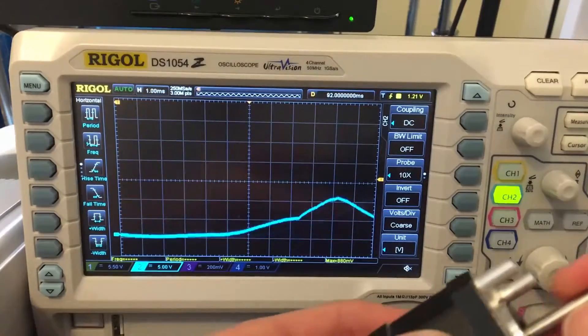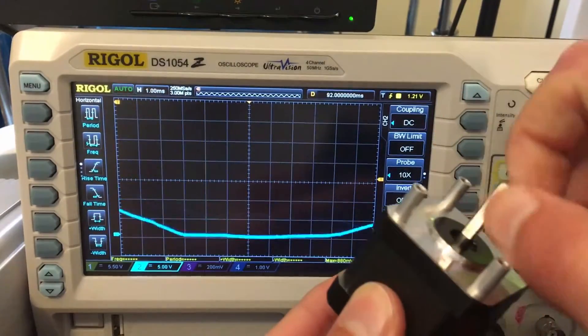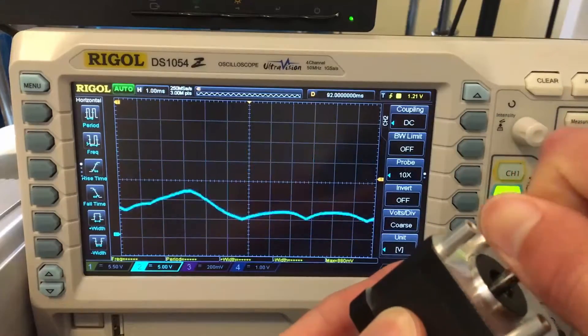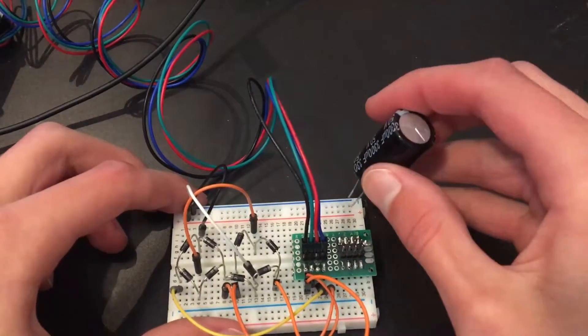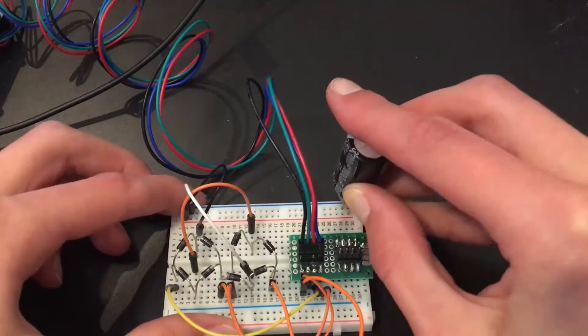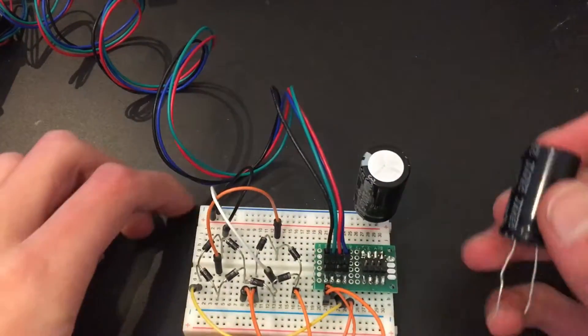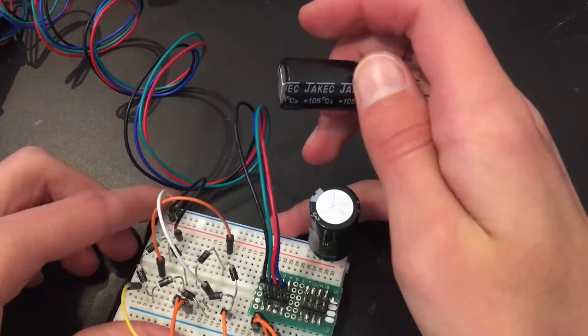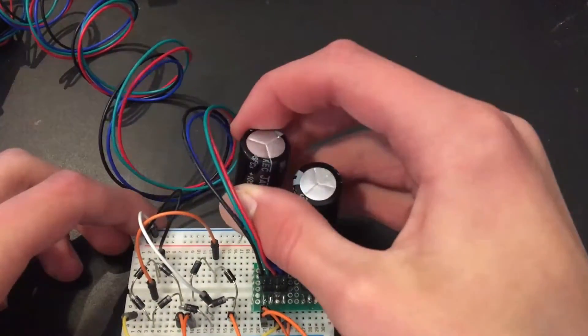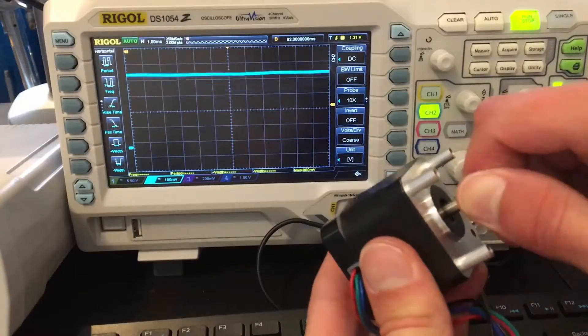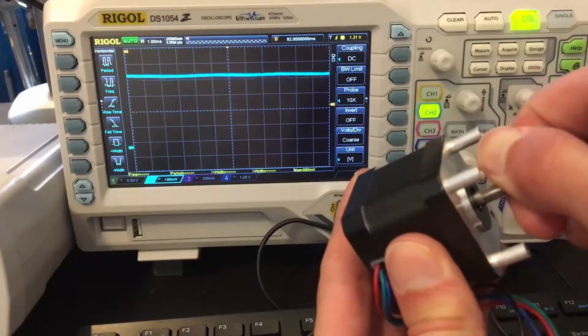This circuit will work, but it'll produce somewhat of a choppy waveform instead of the pure DC voltage that we want. So to solve this problem, we'll add some large smoothing capacitors to the output rails. Negative on the capacitor goes to the negative rail, and the other side goes to the positive. This is already looking much better than it was before.